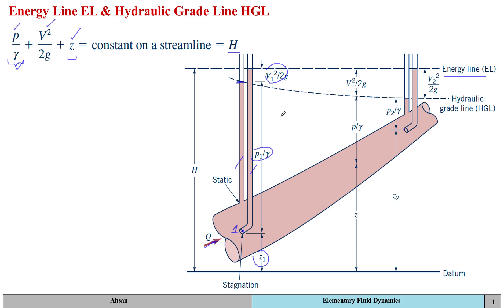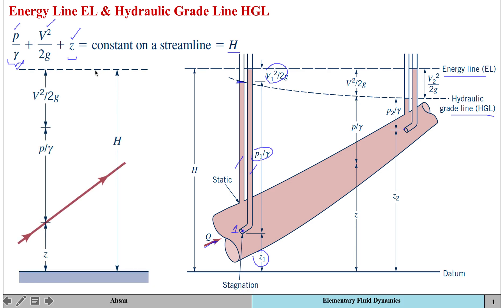The hydraulic grade line is not going to be horizontal because it excludes the velocity head component, which changes at different locations within the pipe. This variation from point one to point two is not linear, since the velocity head varies to the order of magnitude of two.